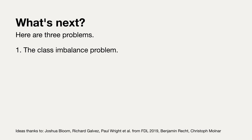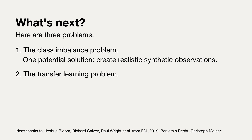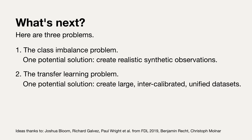One potential solution is to create realistic synthetic observations of events using tools like generative adversarial networks. Another problem is transfer learning — we're all using different data sets and learn different things from each. Someone could use historical data from a satellite operational in the early 2000s to predict flares, and I could use data from the Solar Dynamics Observatory. But how can we capture and transfer the learning gained from training on one data set to another relevant problem? One solution I've seen in heliophysics is creating large, intercalibrated, unified data sets.